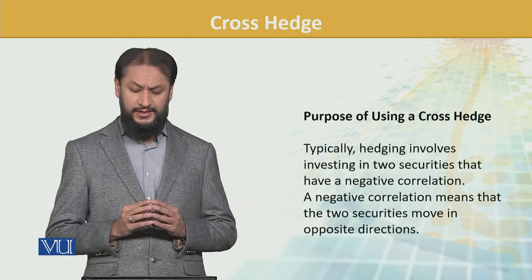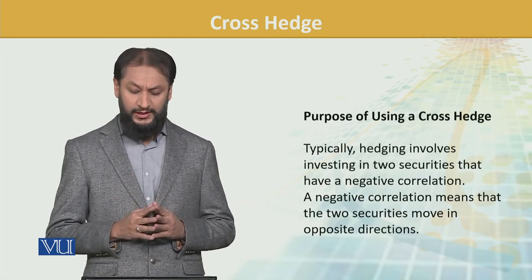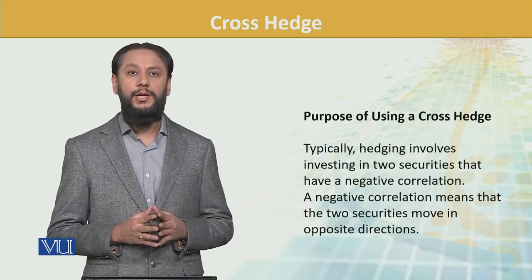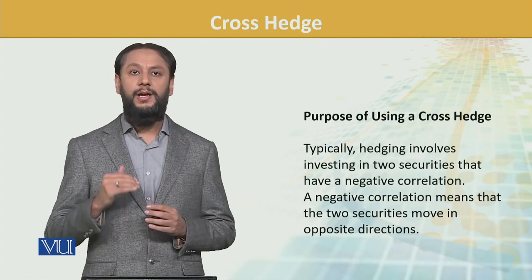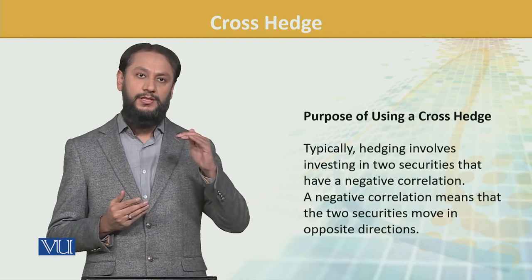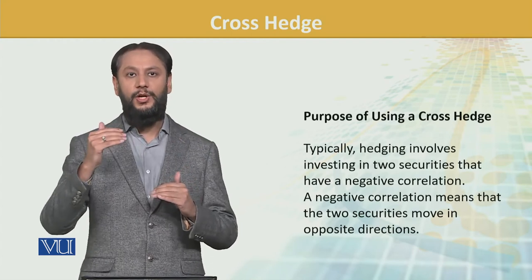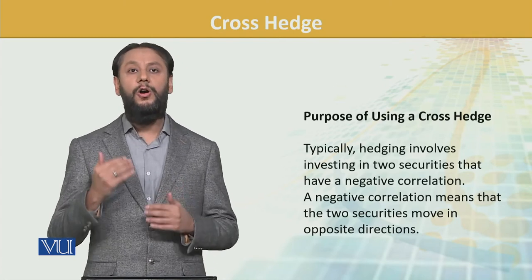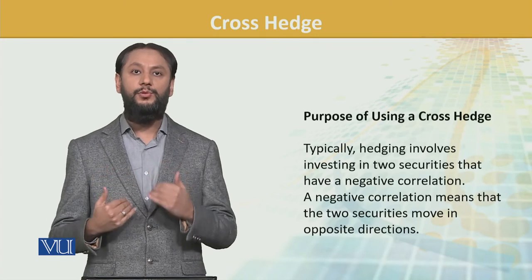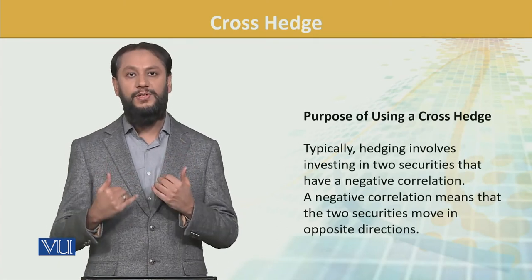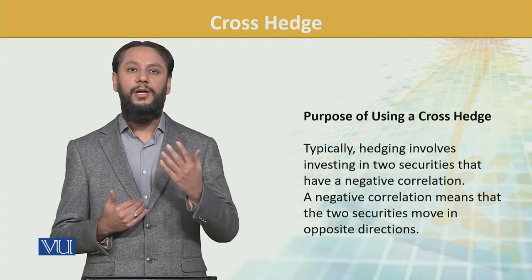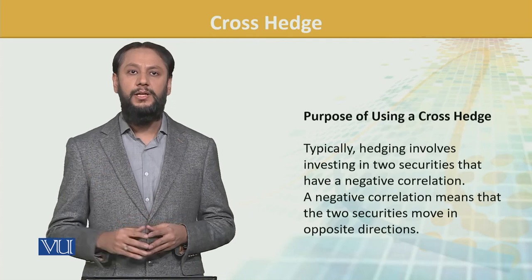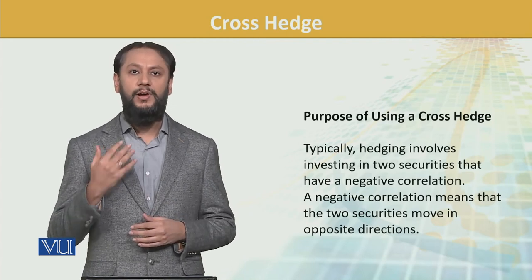Typically, hedging involves investing in two securities that have negative correlation. Negative correlation means two securities move in opposite directions — if one falls, the other rises and compensates. If you take a negatively correlated position, a fall in your asset's price will be offset by a rise in the other. That is the beauty of cross hedge. We will discuss this further in future modules with skill distributions for a better understanding.